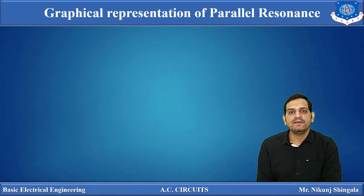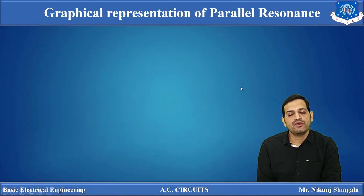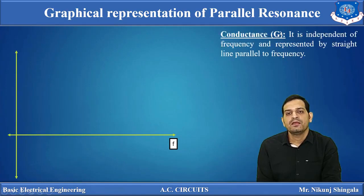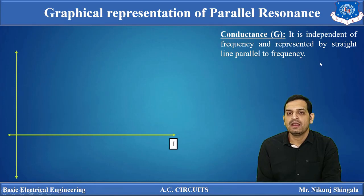Now, moving towards the graphical representation of parallel resonance. I have already discussed graphical representation of series resonance. The graphical representation of parallel resonance shows variation of conductance, admittance, inductive susceptance, capacitive susceptance, and current with respect to frequency. Frequency is taken as a reference and drawn on the X-axis. Conductance is independent of frequency because it is a reciprocal of resistance, so it is represented by a straight line parallel to the frequency axis.